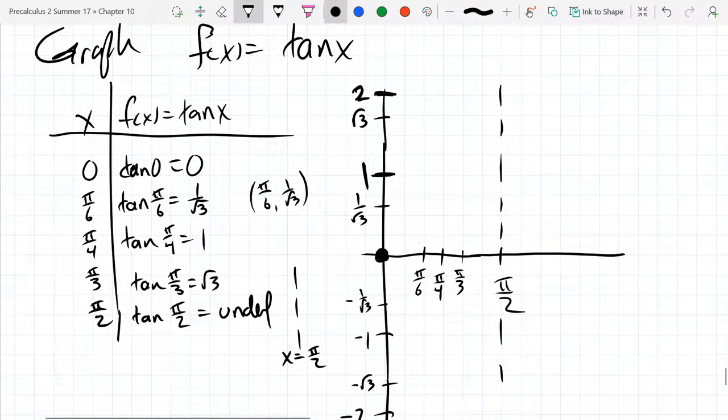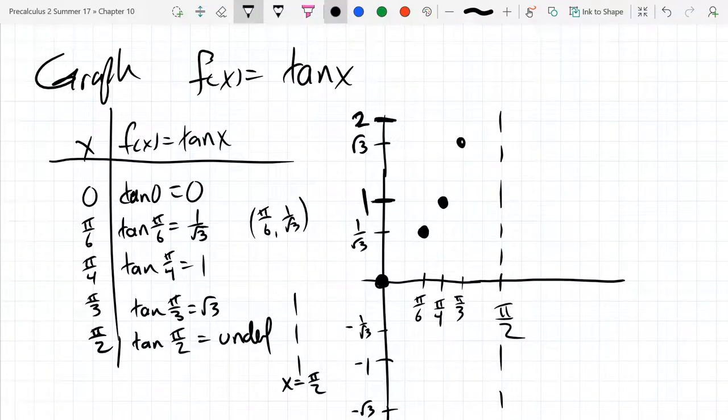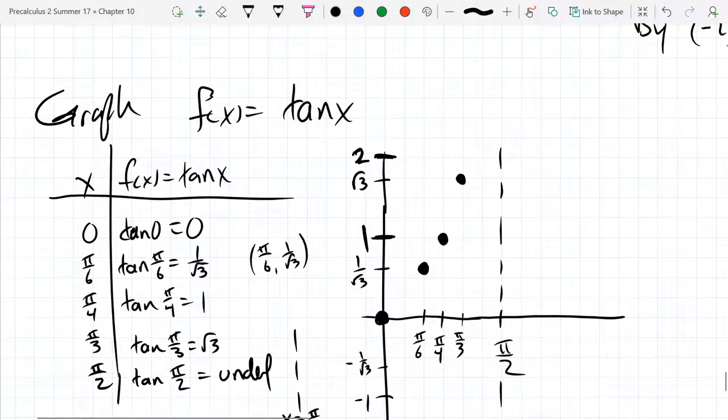We're just going to start plotting points now. So we got zero already. One over square root three. Pi over six. One over square root three. Pi over four. One. Pi over three. Square root three. Right about there.